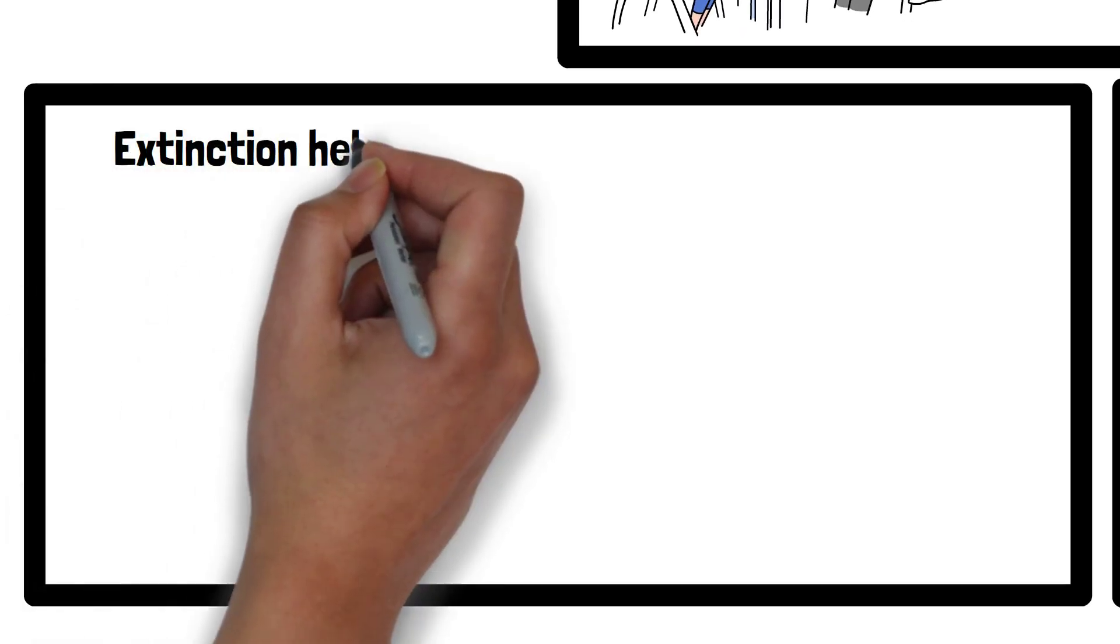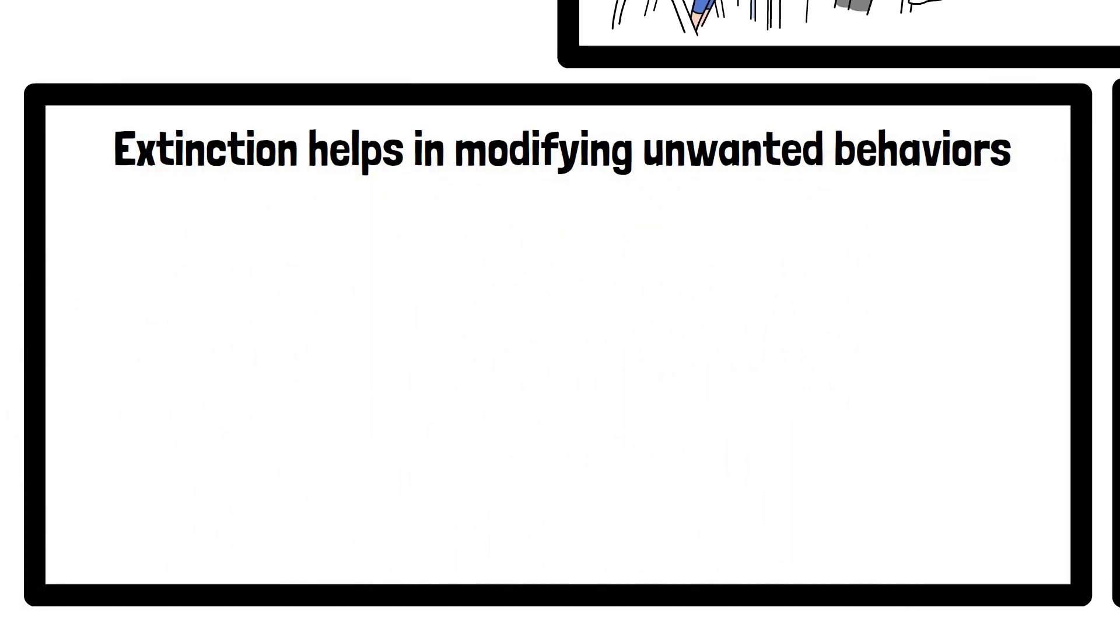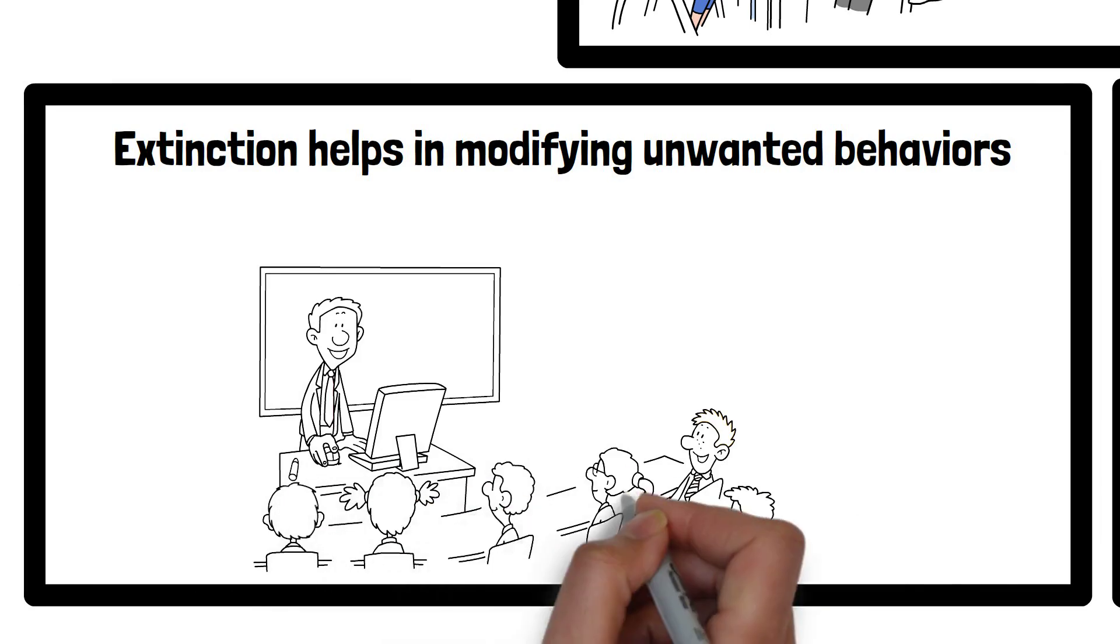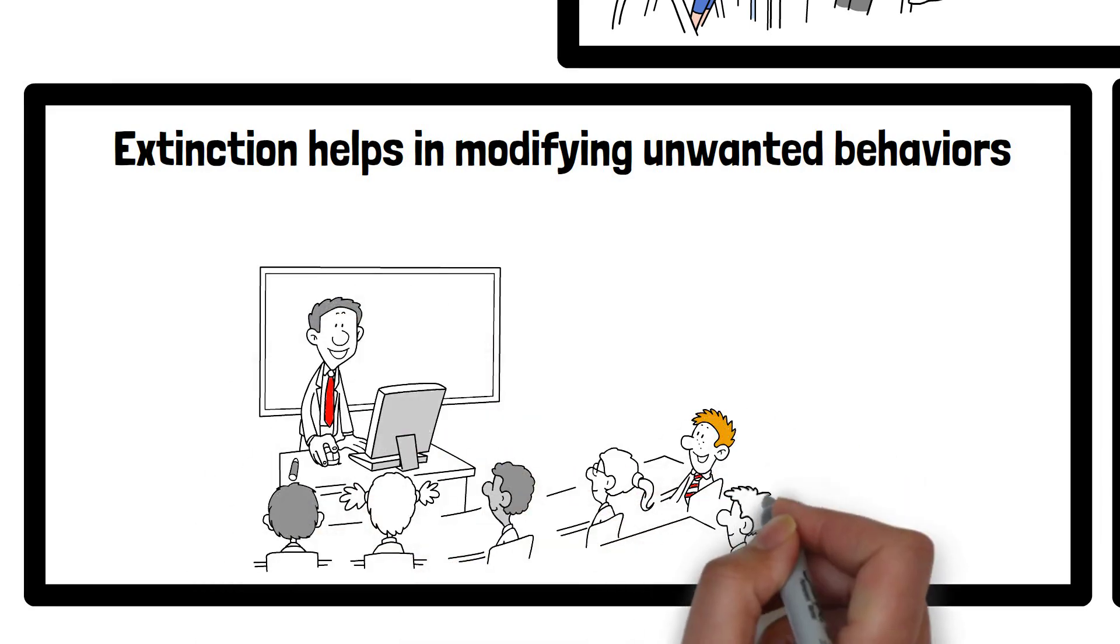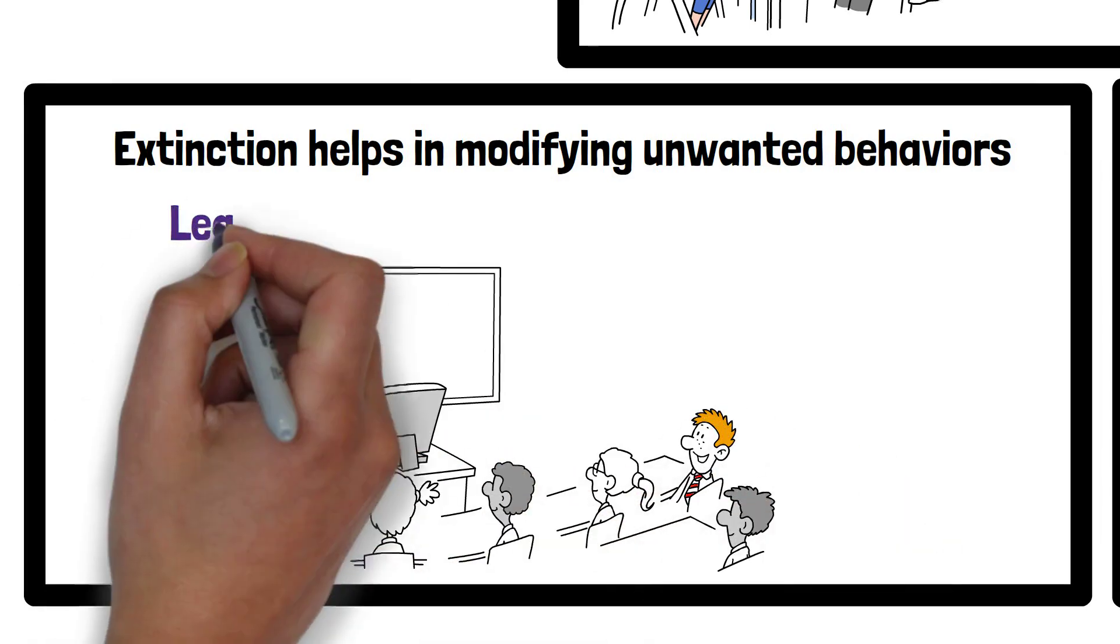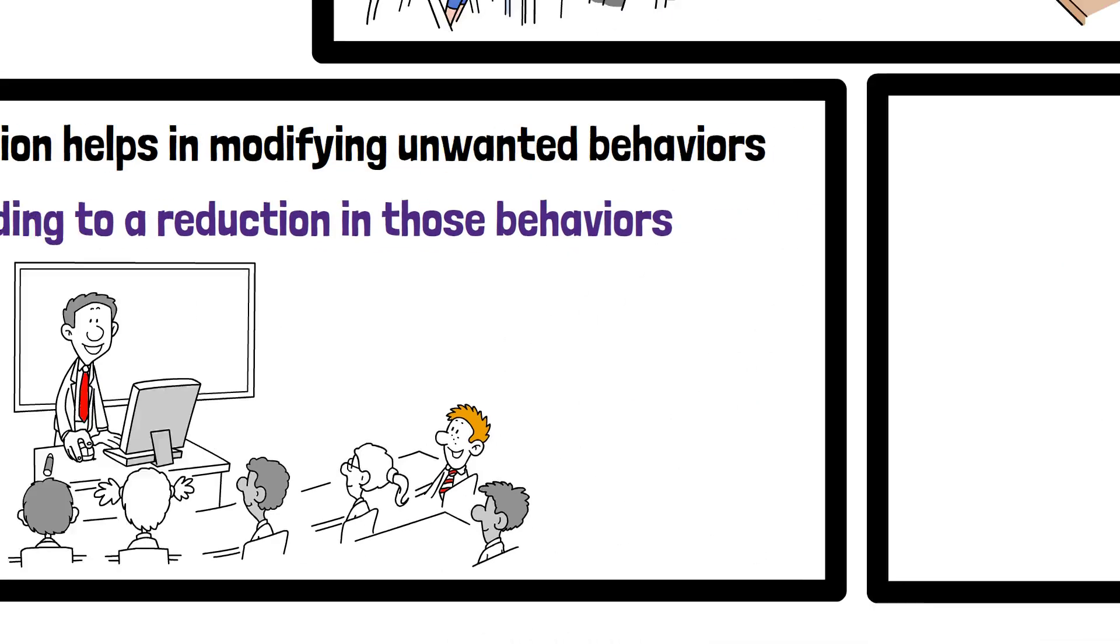Secondly, extinction helps in modifying unwanted behaviors. For example, in a classroom setting, a teacher can use extinction by ignoring disruptive behaviors, leading to a reduction in those behaviors. Thirdly,